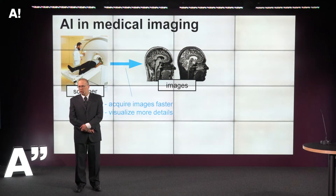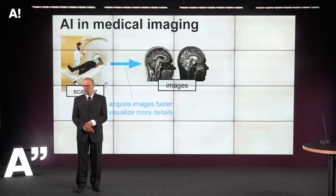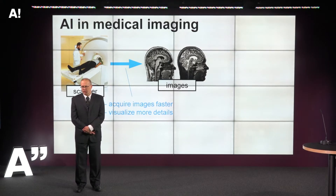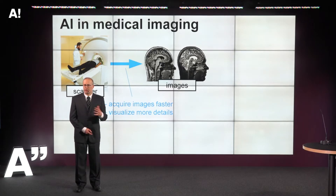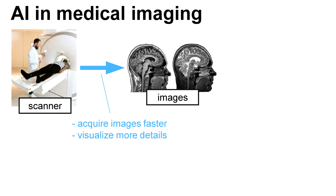More generally, AI in medical imaging is used in two places. One is in acquiring data — you get a scanner, you get images out. AI can help you get the data out faster, which is nice for the patient; they don't need to be in a very tight tube for a long time.